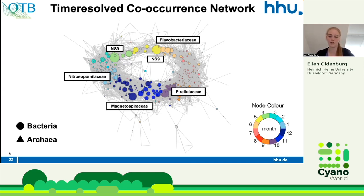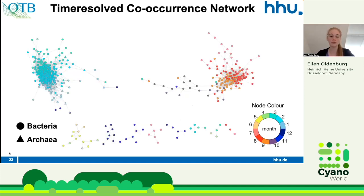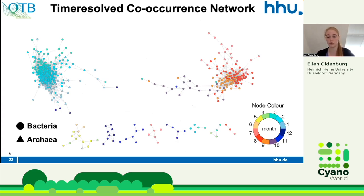You can see the organisms with the highest betweenness centrality. If you remove the nodes with the highest betweenness, you can see that the network completely breaks apart into these large modules, which depend strongly on temperature and season. This leaves us with two big networks for winter and summer.